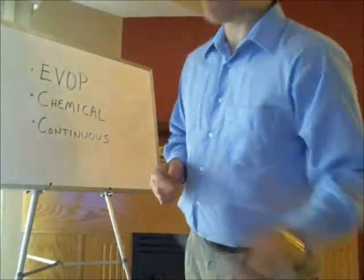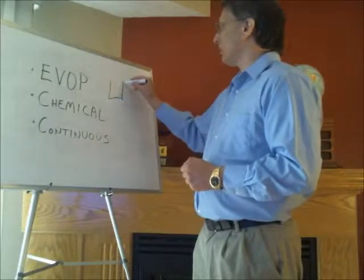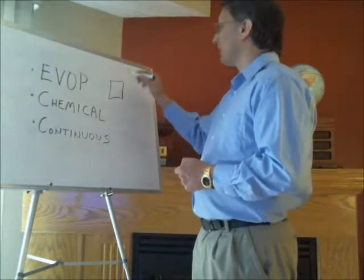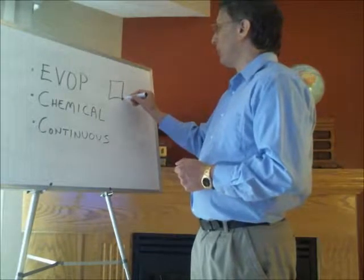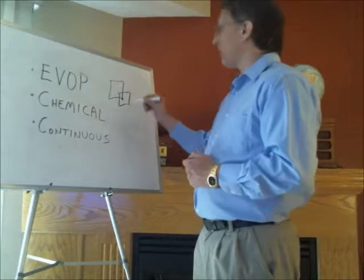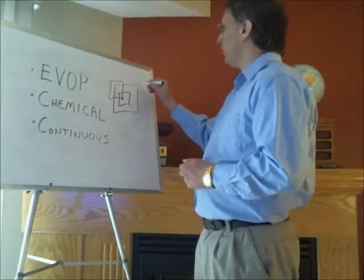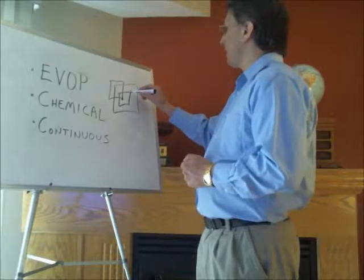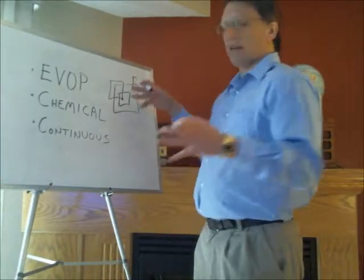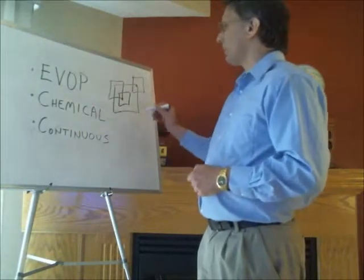The way EVOP really simply works is: you do your design experiments — your box, so to speak — and then based on some replicates, you find the best condition. You center a new design space there, do some more replicates, maybe the box expands, and you're just continually moving to the best condition. That's the evolving part of your operation.